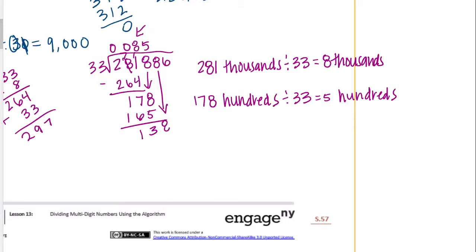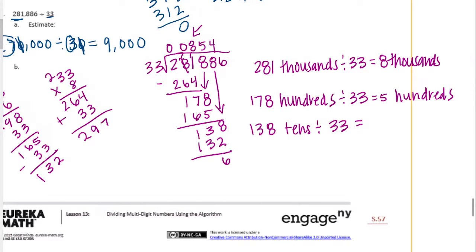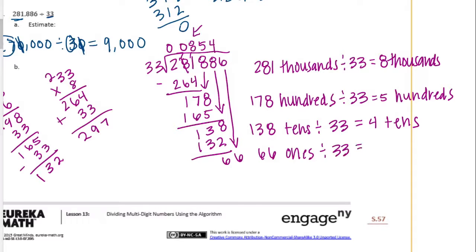Bring down the 8. Now we have 138 tens that we're dividing by 33. Looking back, 33 times 5 was 165, so I bet it can go in 4 times. Let's subtract 132. So that was equal to 4 tens. And we've made it to the ones place. 66 ones divided by 33: 66 divided by 33 is 2 ones, it can go in twice. So our answer is 8,542.